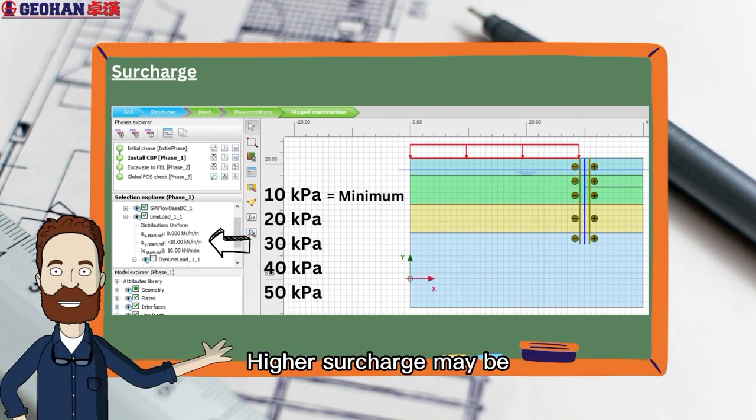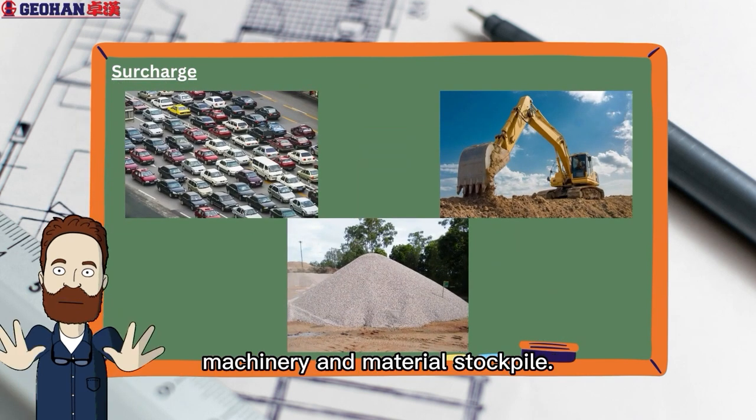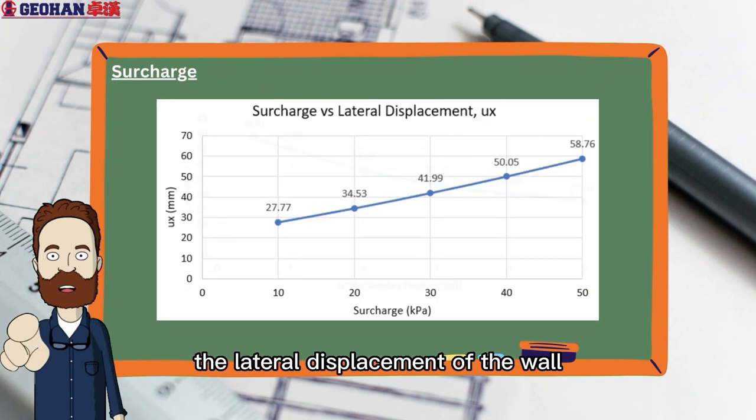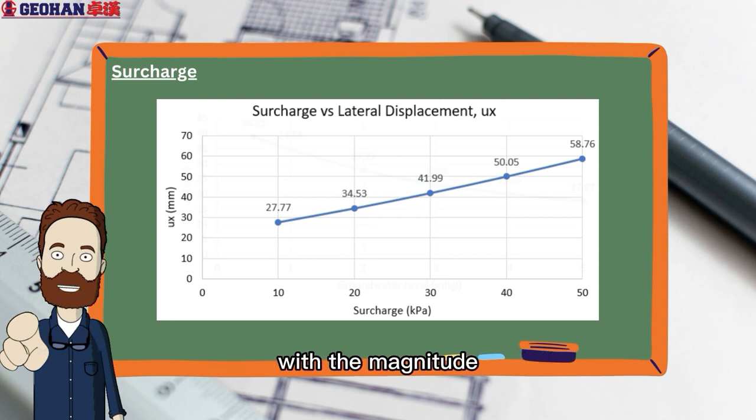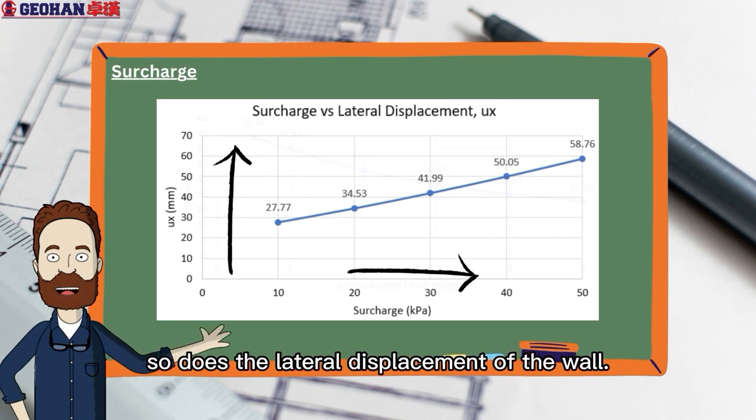Higher surcharge may be encountered when there is additional load such as traffic load, machinery, and material stockpile. The outcomes reveal a clear trend. The lateral displacement of the wall exhibits a direct and proportionate relationship with the magnitude of the surcharge. In simpler terms, as the surcharge load increases, so does the lateral displacement of the wall.